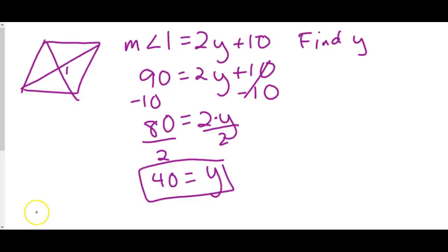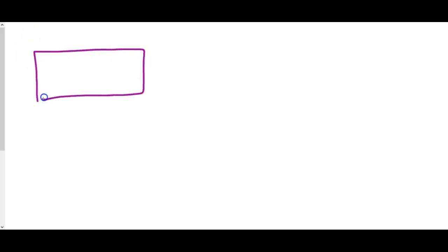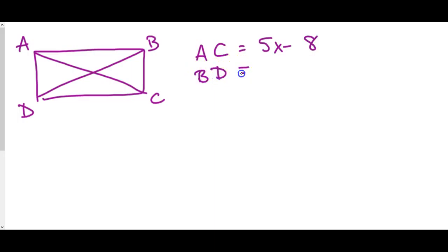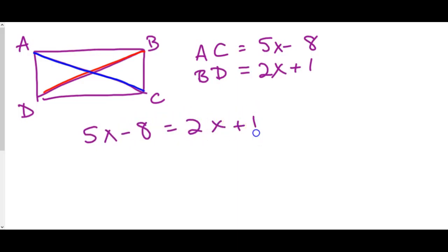Now let's talk about some rectangle problems. Say we have rectangle ABCD with diagonals drawn. We know AC equals 5x minus 8 and BD equals 2x plus 1 — these are the full lengths of each diagonal. One of the special properties of a rectangle is that the two diagonals are congruent, so we set them equal: 5x minus 8 equals 2x plus 1.